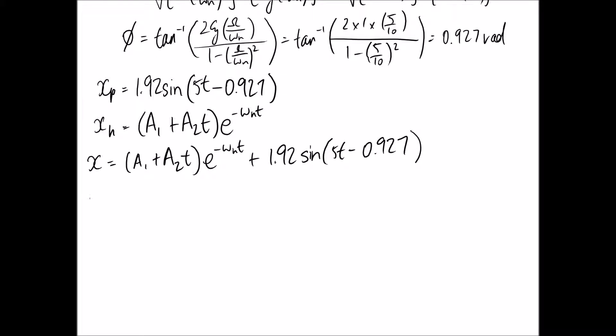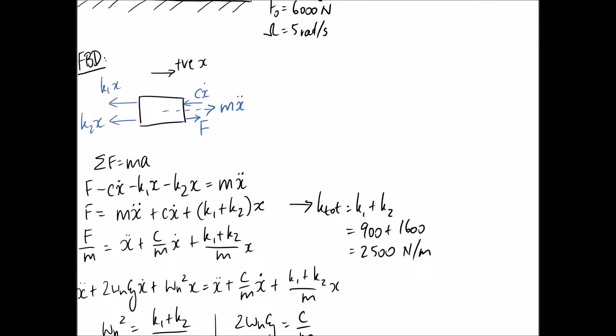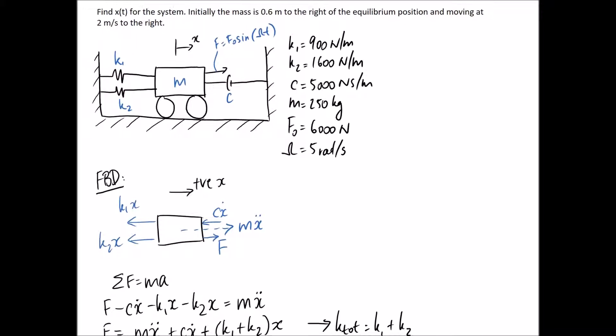So now we just need to figure out what our initial conditions are so that we're able to use these to find A1 and A2. We need at least two conditions because we have two unknowns. It tells us that initially the mass is at 0.6 meters to the right of the equilibrium position, and moving at 2 meters per second to the right as well. So there are two conditions.